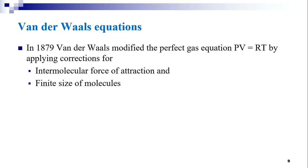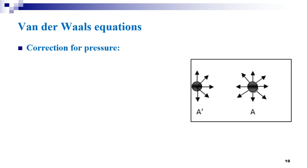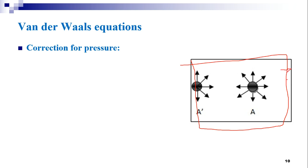Van der Waals modified the pressure and volume terms in the perfect gas equation PV = RT to correct the ideal gas law for real gas behavior. Here, a container or vessel is filled with gas molecules that move inside and undergo collisions with kinetic energy. Whenever these molecules hit the walls of the container, a pressure is exerted on the walls.